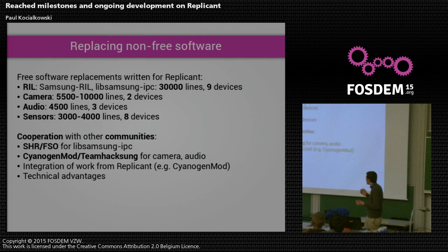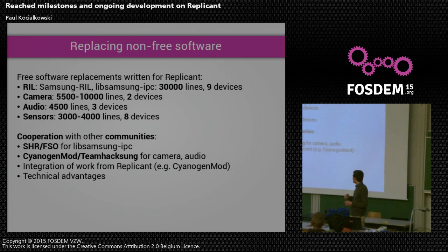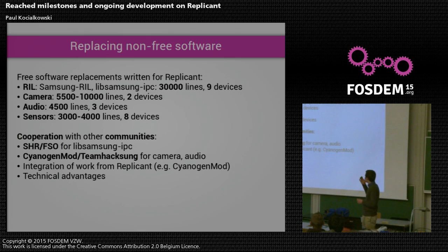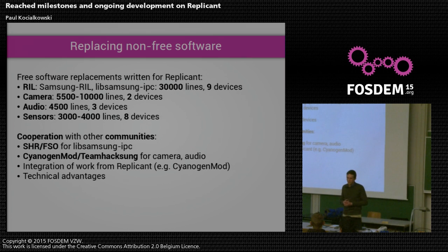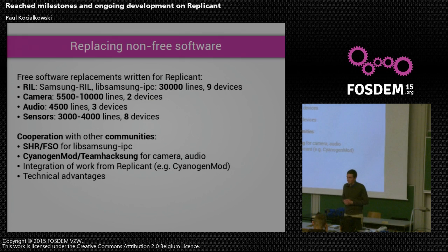We still do stuff ourselves. Over the past three years, for the Radio Interface Library I wrote Samsung RIL and LibSamsung IPC. Thankfully on the Samsung IPC we had external contributions, so that's 30,000 lines that work on nine devices. Then camera — five to ten thousand lines — audio, sensors, you get the idea. We wrote a good amount of free software to get those devices to work. Sometimes other communities are interested in lending a hand. We had the SHR and FSO community for LibSamsung IPC.